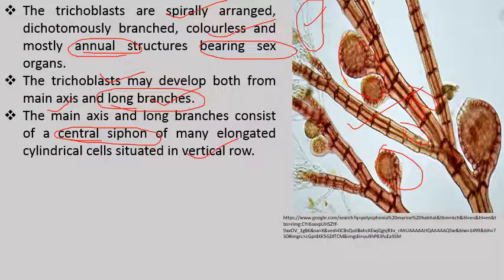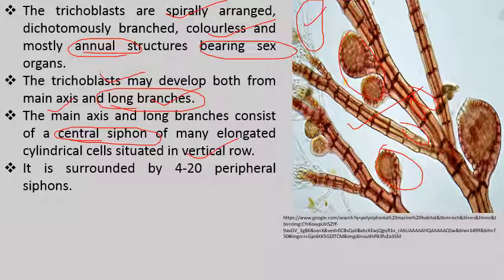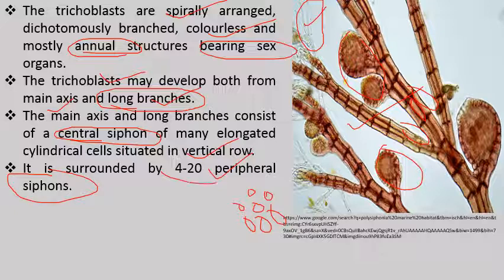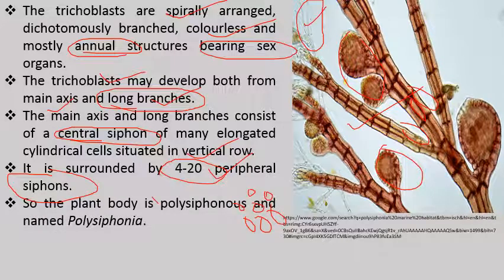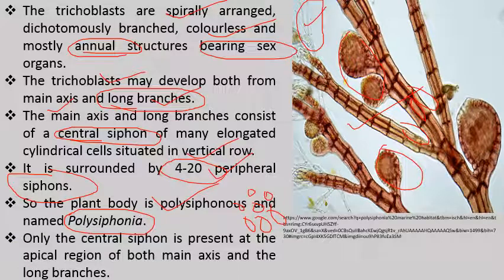The central siphon is surrounded by 4 to 20 pericentral siphons, as seen in the previous slide. The plant body is polysiphonous — meaning many tube-like structures are present — which is why it is named Polysiphonia. In the apical region, only the central siphon is present. Both the main axis and the long branches consist of a single central siphon at the apex.